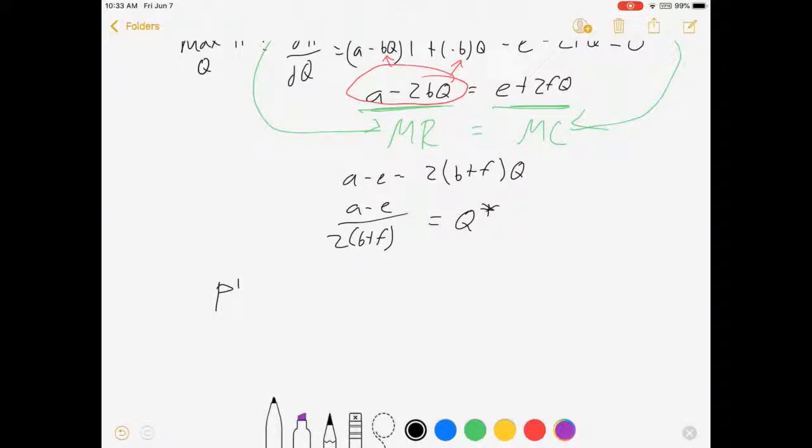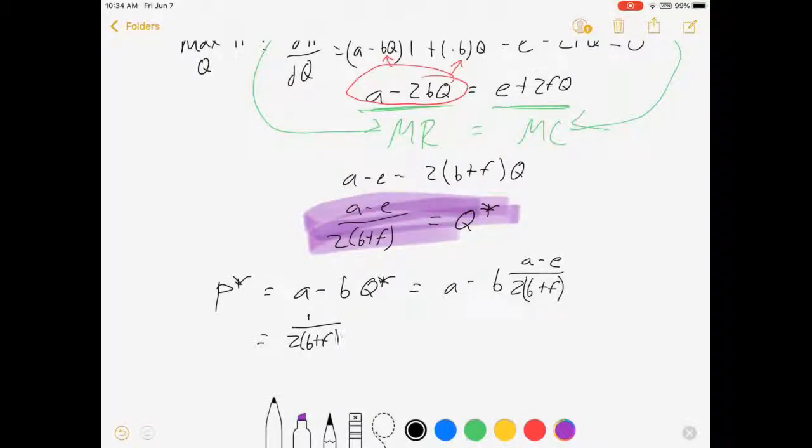So P star is equal to A minus BQ star equals A minus B. So P star is equal to A minus E over 2B plus F, which I'm going to skip a little bit of algebra here. 1 over 2B plus F times AB plus 2AF plus EB. That's your P star.